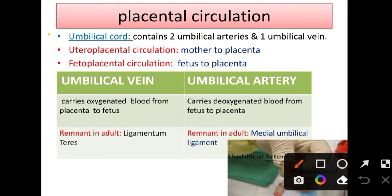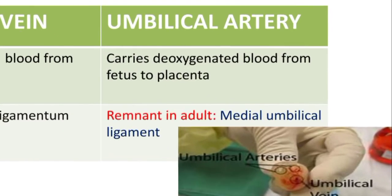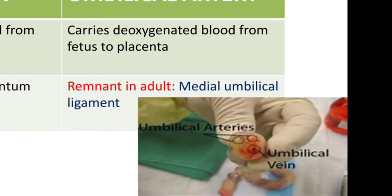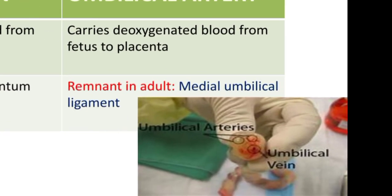Next is the umbilical cord. In the umbilical cord there are two umbilical arteries and one umbilical vein, which you have to observe during examination of the placenta. As you can see in the picture, there are two umbilical arteries and one umbilical vein — this is the same structure we see when the umbilical cord is cut.